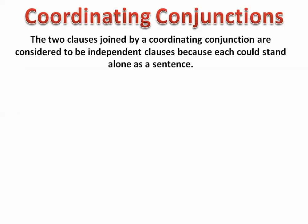Coordinating conjunctions combine two phrases or clauses that are considered independent, meaning they can stand by themselves. We're going to focus on the coordinating conjunction 'denn,' which in English means 'because.' There are actually two conjunctions in German that mean 'because' — one is the coordinating conjunction 'denn,' and the other is a subordinating conjunction. This will be a good example for us to use.